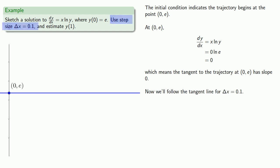Remember, our slope is our change in y over the change in x. Well, that's equal to 0, delta x is 0.1, and so delta y is going to be 0. And if we put this together, we go from the point (0, e), x increases by 0.1, y increases by 0, and so we arrive at the point (0.1, e).